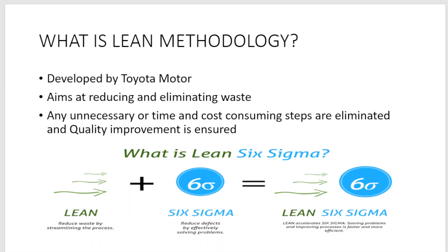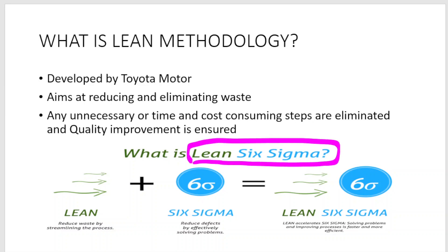So Six Sigma is about reducing defects and errors and improving the quality of the process, while Lean methodology is about reducing and eliminating waste from the process. In most business setups and laboratories, Lean Six Sigma — applying both Lean and Six Sigma methodology — is currently used and has given enormous benefits.